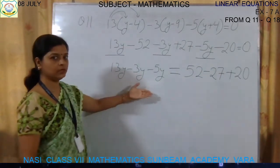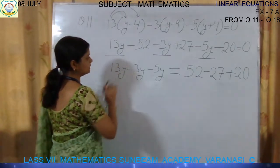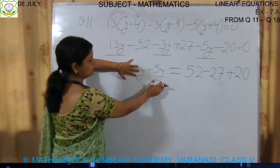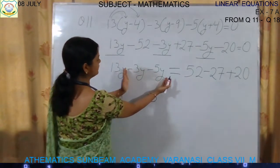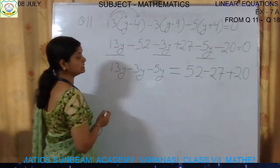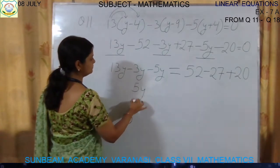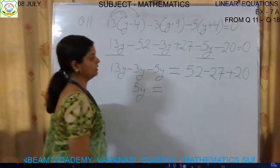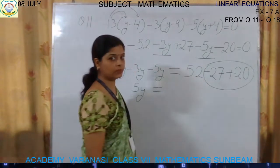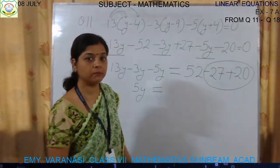Now we will solve the left-hand side and right-hand side. 13 minus 3 is 10, and 10 minus 5 is 5y. For the right-hand side, solving minus 27 and plus 20: signs are different, so we subtract. 27 minus 20 leaves 7, and since 27 is the bigger number with a negative sign, we get minus 7.